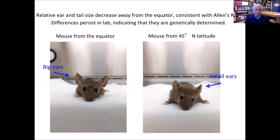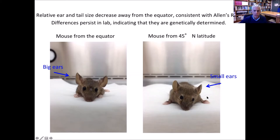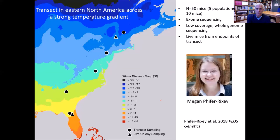The mice conform to Bergmann's rule — and they also conform to Allen's rule. We see differences in ear size: mice from the equator have big ears, while mice from 45 degrees north latitude have small ears. They also differ in tail size. Again, these differences persist in the lab.